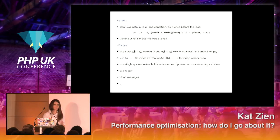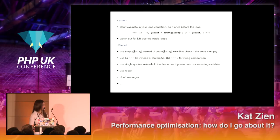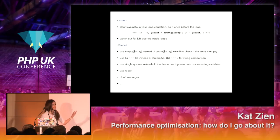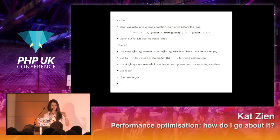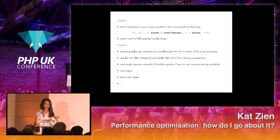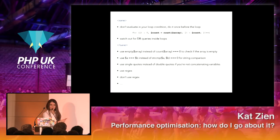When you start Googling, you might find some sane advice on the internet. These are what I would say general good coding habits. Things like: if you have a condition in your for loop, don't evaluate that every time — do that beforehand and just use a constant in the loop condition. Watch out for DB queries — if you've got really long if-else ladders and somewhere inside you're doing a select from the database that you could have done at the beginning for multiple IDs instead of looping through the IDs one by one. Then you get into things like: use is_empty array instead of count array equals zero, or use triple equals instead of string compare for string comparison because it's faster.